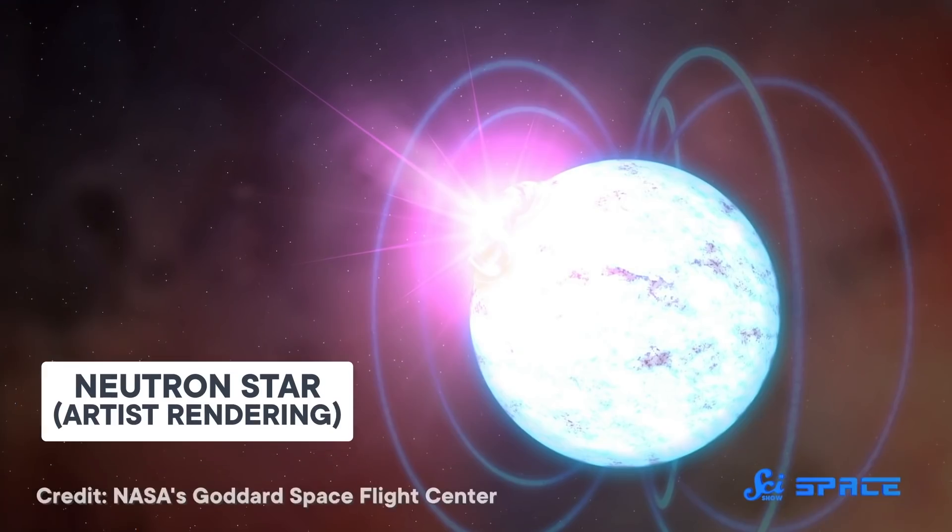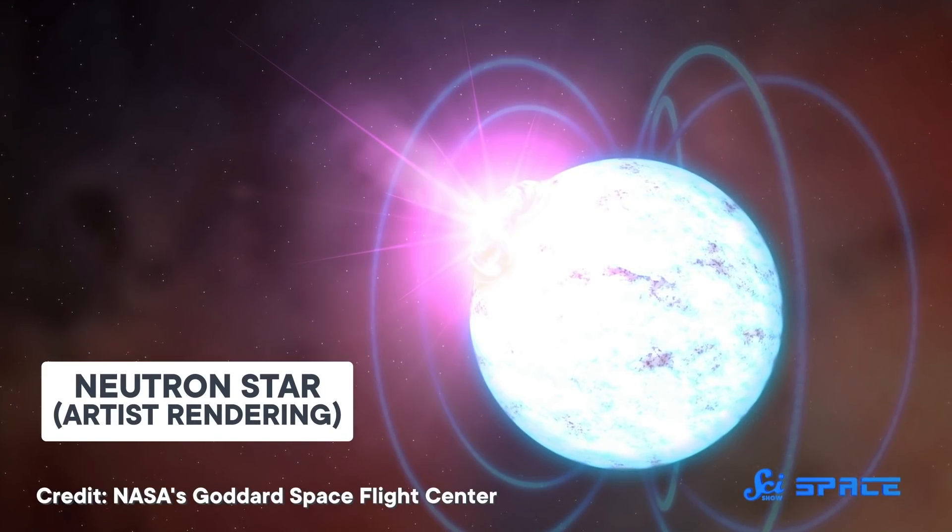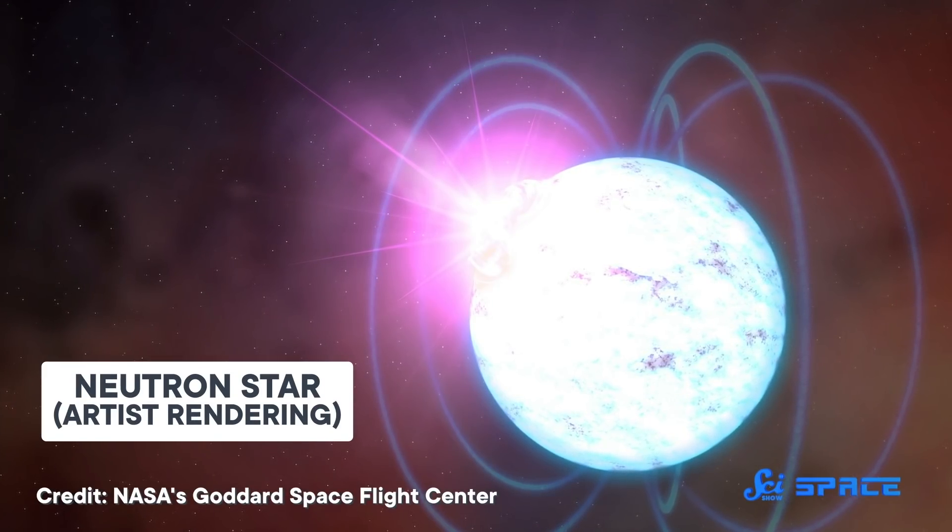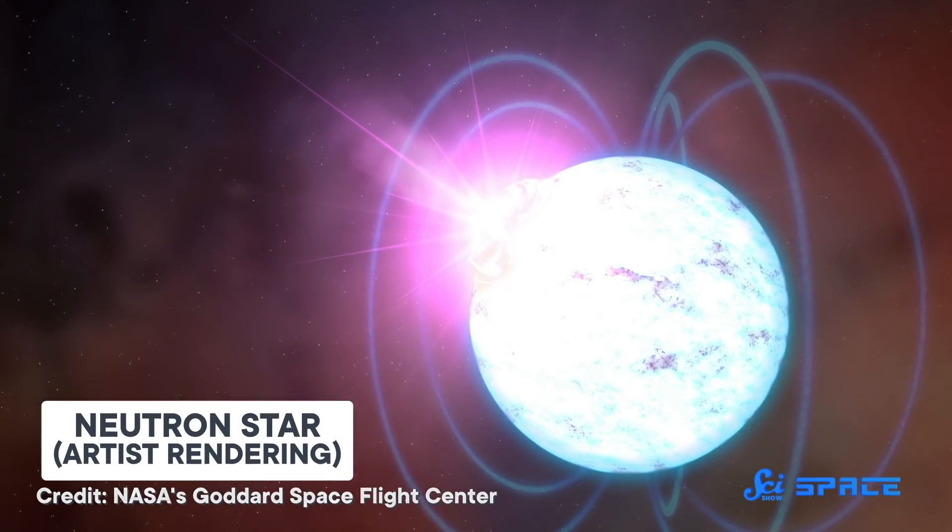These two ends of the size spectrum actually have more in common than you might think. After all, we can find these tiny particles just about everywhere in the universe, including in neutron stars. So some scientists are using particle accelerators to turn astrophysics on its head by applying what they have learned from neutrons in the smallest things on Earth to some of the most massive things in the universe.